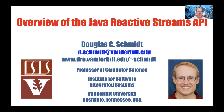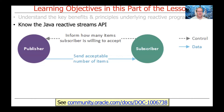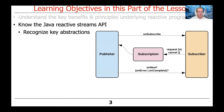Now that we've done a brief recap of what reactive programming is all about, let's give a quick summary of the Java Reactive Streams API. The API defined in standard Java is actually pretty simple. We'll talk about the key abstractions that are part of that API, which include publishers, subscribers, and subscriptions.